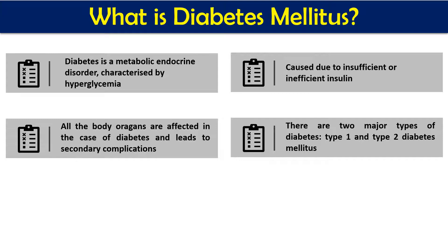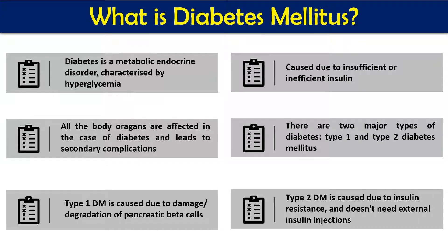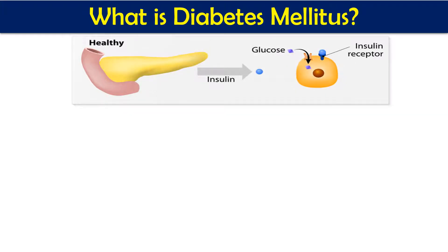Type 1 diabetes mellitus occurs when pancreatic beta cells are damaged, so the body does not produce sufficient insulin — this is insulin insufficiency and we require external insulin. Type 2 diabetes mellitus is caused by insulin resistance; the body produces sufficient insulin but is unable to use it, so external insulin is not required — it is insulin independent. Normally, insulin opens glucose channels on specific cells like adipocytes, hepatocytes, and cardiac tissue, allowing glucose to enter and be utilized.